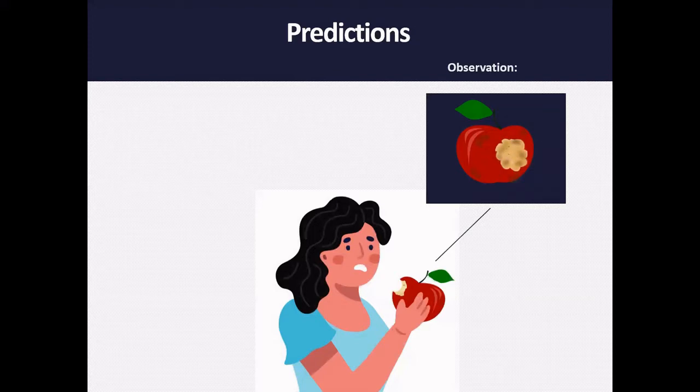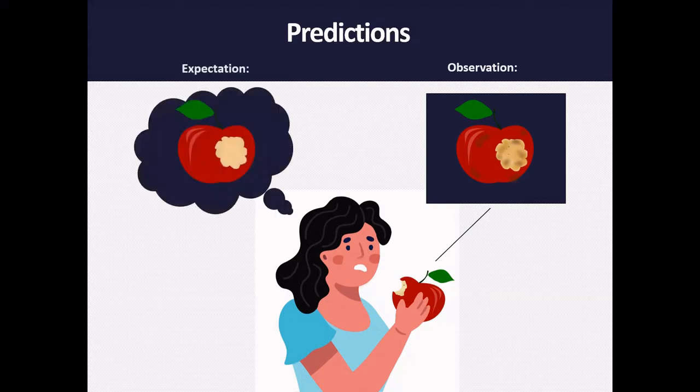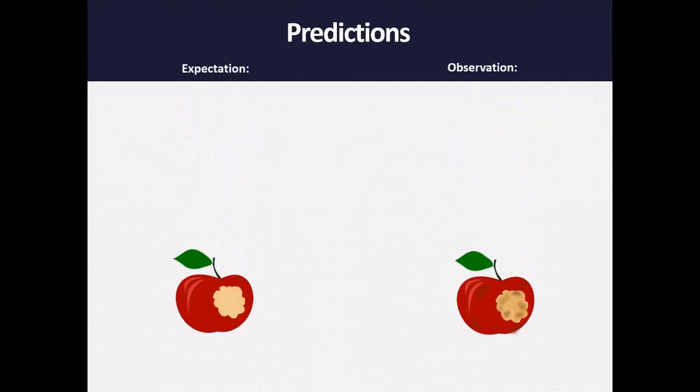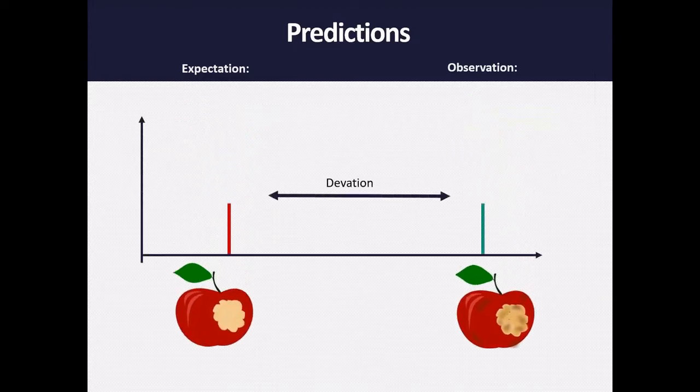But an event can only be identified as unexpected if there is an expectation or prediction to begin with and if there is a large enough deviation from that prediction. Large enough must be a statistical judgment because there is random variation in events themselves, in our perception of events, and in our predictions.